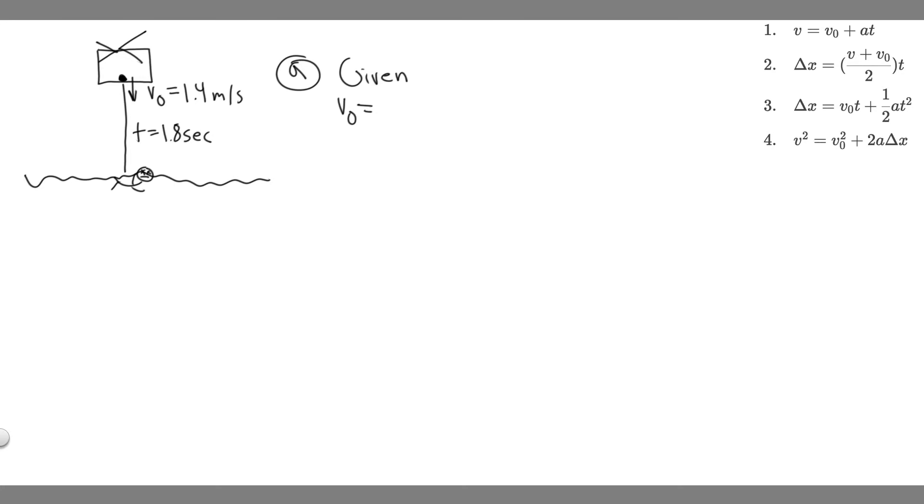Generally, when you do kinematic problems like this, downwards is negative and upwards is positive. So since it's going downwards, the initial velocity is negative 1.4 meters per second. We're also given the time, 1.8 seconds. That doesn't need direction because it's just time.